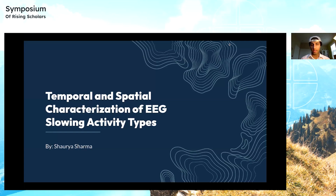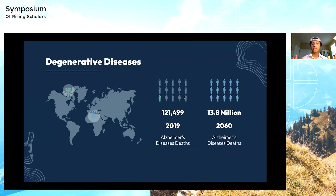I'm particularly trying to target degenerative diseases. To start off our presentation, let's talk a little bit about what is the problem. So, degenerative diseases — as of 2019, Alzheimer's disease has amounted to 121,499 deaths. But according to other researchers, in 2060, it seems that we will have 13.8 million people dying of Alzheimer's disease.